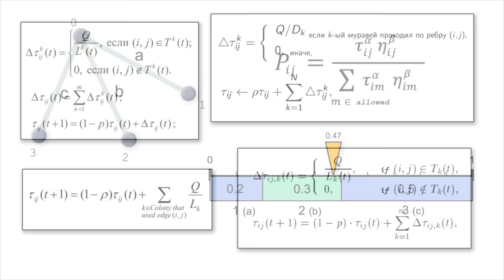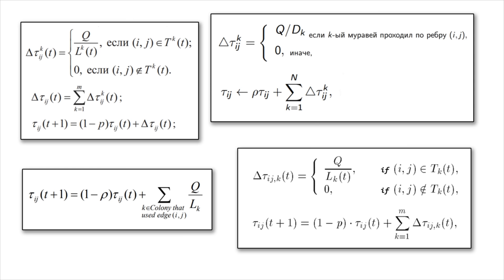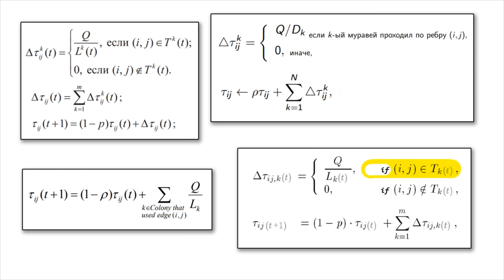Now let's analyze the second formula, which describes the distribution of pheromones across the paths. Pheromones are distributed post factum, when all the ants have completed their route. The pheromone addition that ant k makes on the route between city i and city j at iteration t equals some constant Q divided by the length of the route traveled by ant k, provided that this path is included in the ant's route. If it's not, there is no addition.